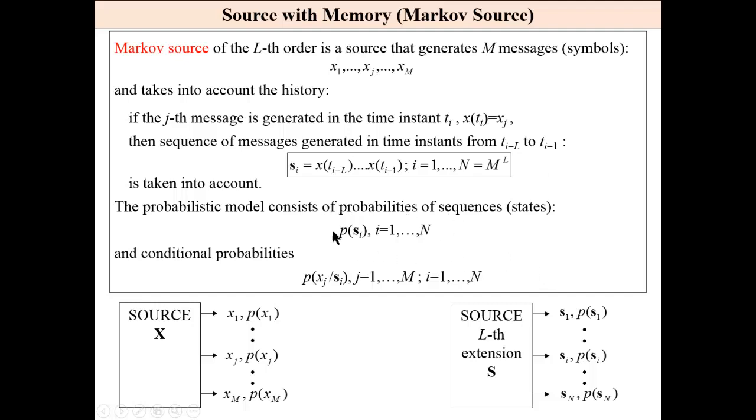First we need to know the probabilities of states and also conditional probabilities. If we are in state i, then xj is generated.